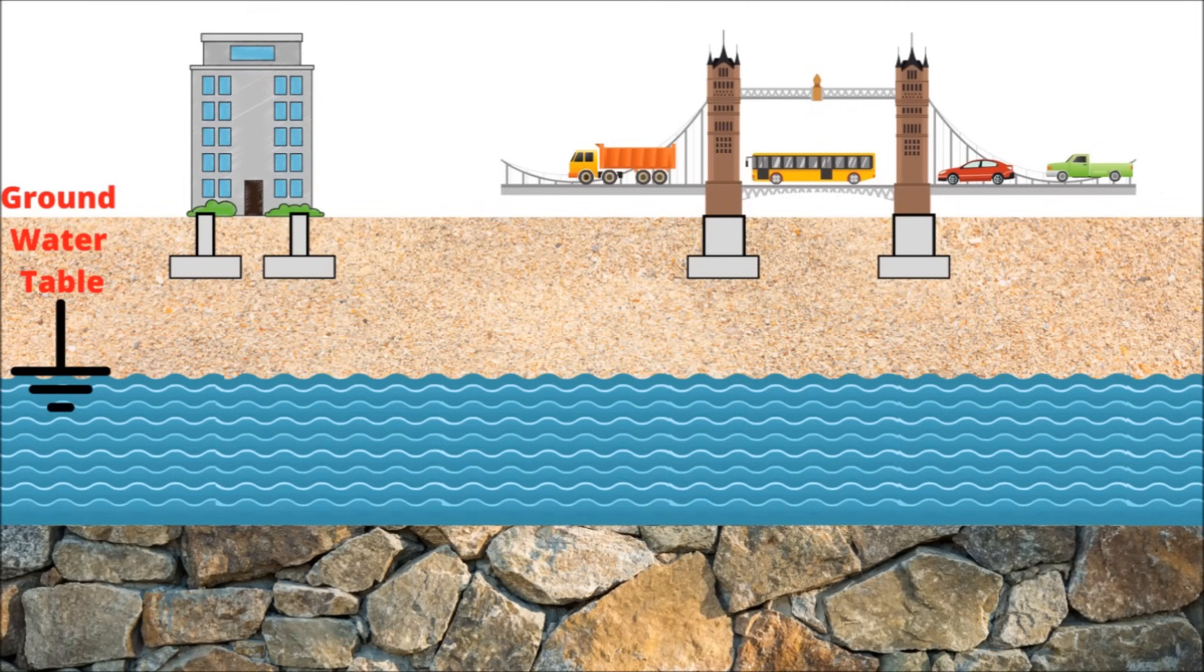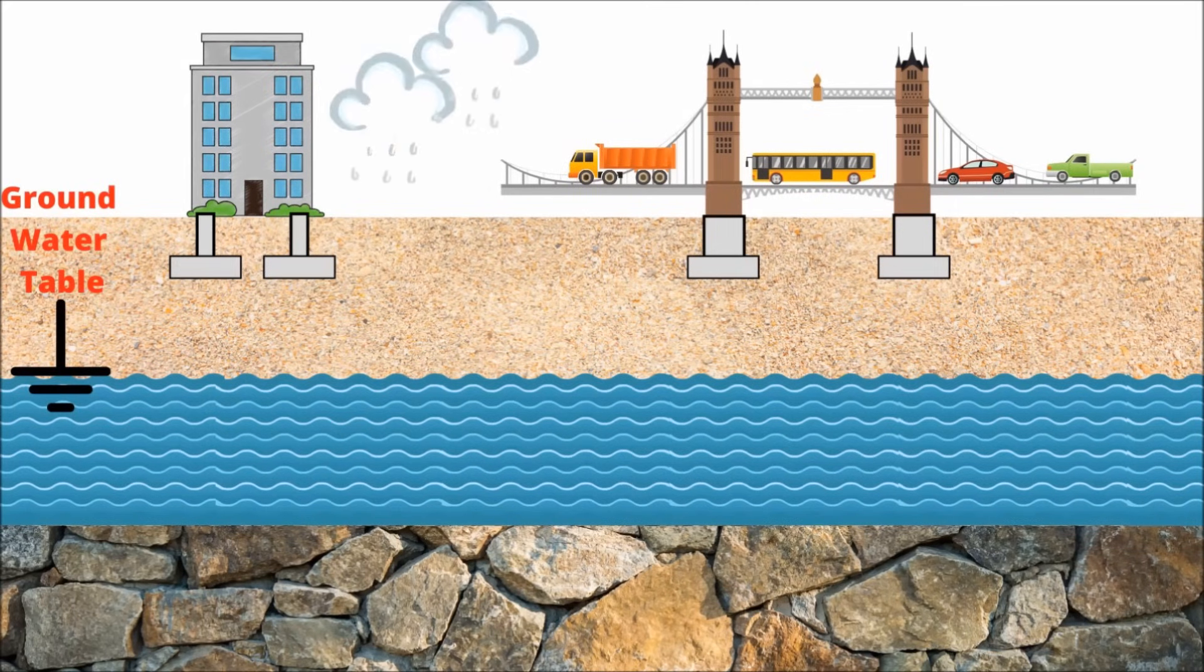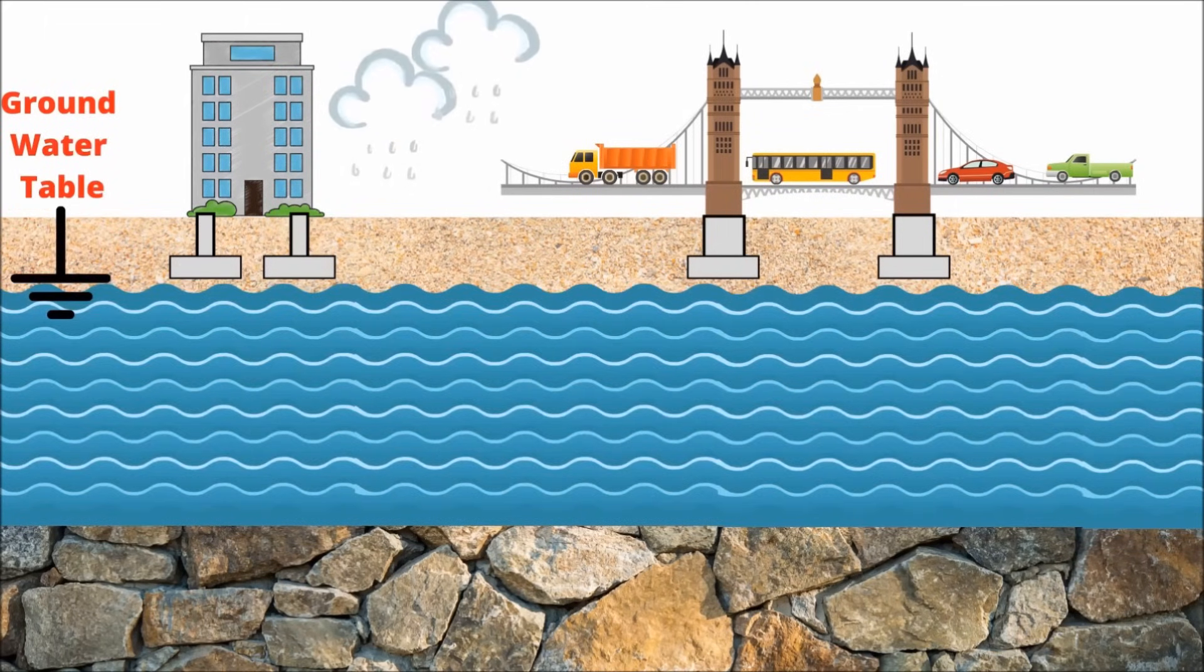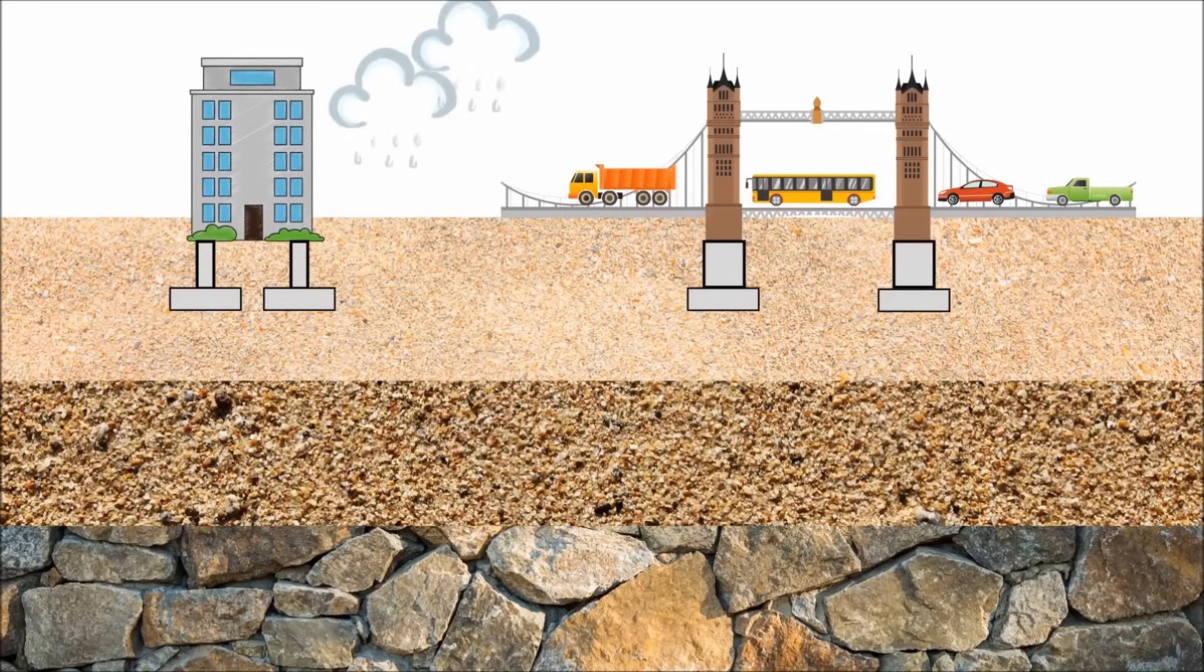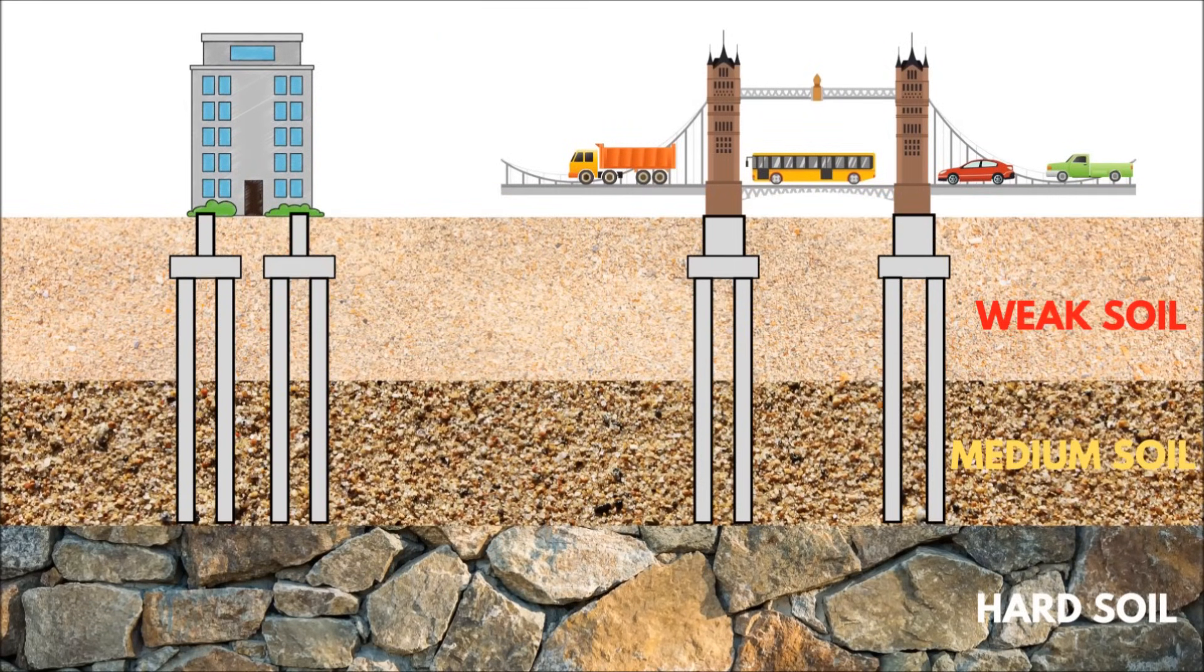In some cases, the ground water table rises so high that the use of shallow foundation will be affected badly. In such situations, pile foundations can be easily penetrated through the water and extended up to hard strata.